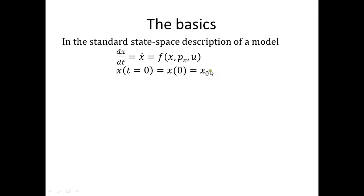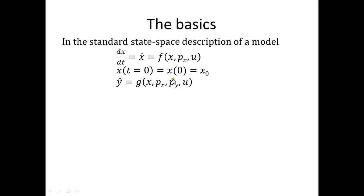The other type of parameters are the initial condition parameters X0 — simply the states at some initial time point, which is usually time zero. The final type of parameters has to do with the measurement equation: we need to specify what we measure, given by the function G, which depends on the states, may depend on the dynamic parameters, and may depend on the input. It may also depend on completely new parameters which only appear in this equation — those are the measurement parameters py.